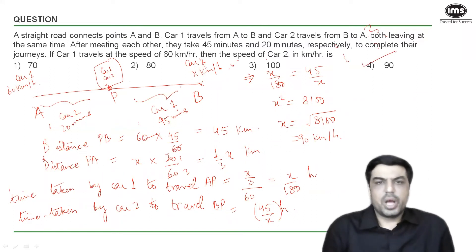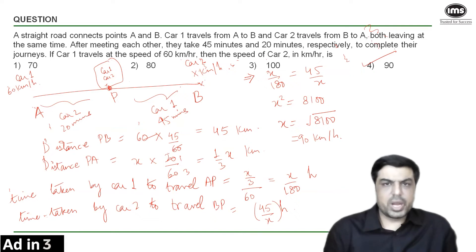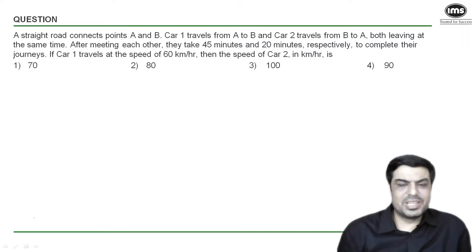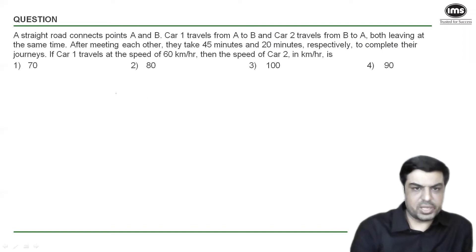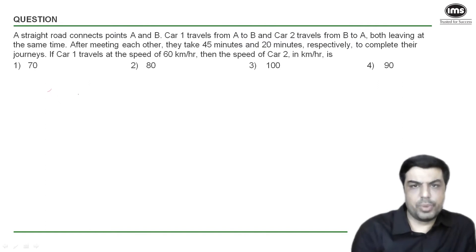So 90 km/h — option 4 — is our answer. That was Method 1, using speed = distance ÷ time and equations. Now let's look at a second method using proportionality. We know: if speed is constant, distance and time are directly proportional; if distance is constant, speed and time are inversely proportional; if time is constant, distance and speed are directly proportional.